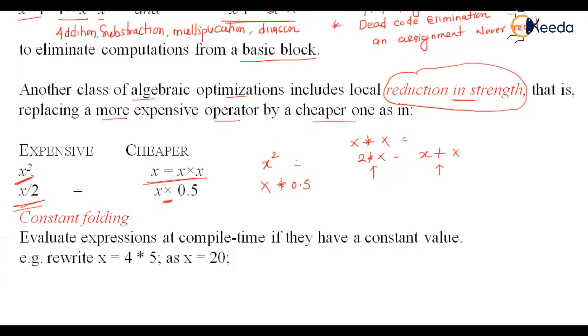The last one is constant folding. Evaluate expressions at compile time if they have a constant value. So now if something like this comes and if this is an expression, during compile time what we can do is find out that x is a constant value and x will be equal to 20. And later, every place where this x is used, directly we can, without computing this expression, put the 20 over there. So constant folding is an operation where we can replace an expression by a constant value.